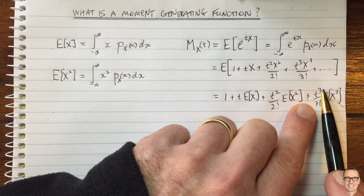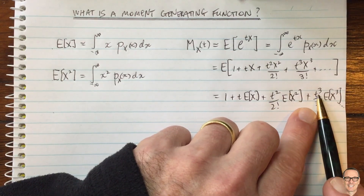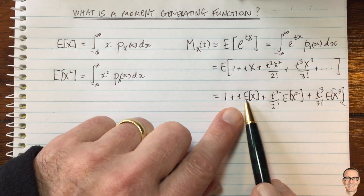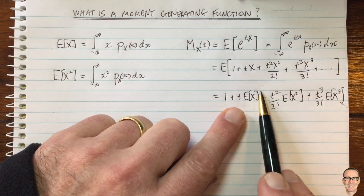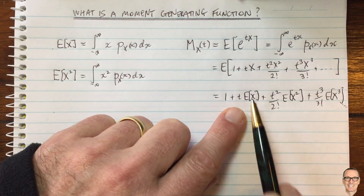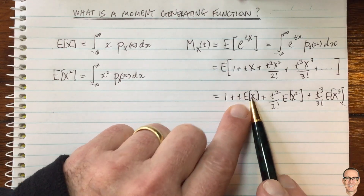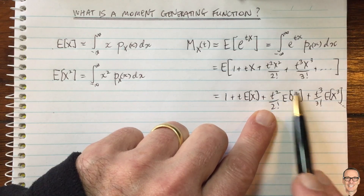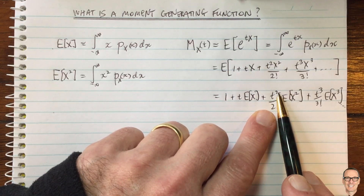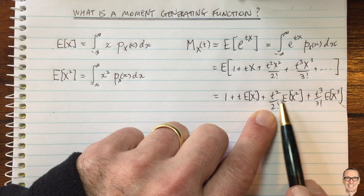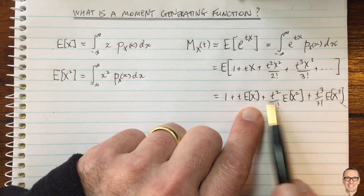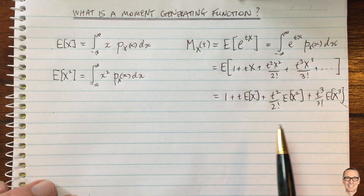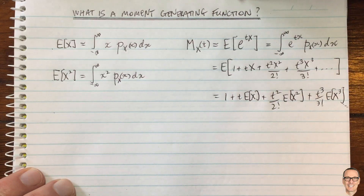When you take one derivative and set t equal to zero, you're left with just E[x]. When you take a second derivative, the first-order term disappears, and the second-order term has a single power of t remaining; setting t equal to zero then leaves just E[x squared]. So by repeated differentiation and evaluating at t equals zero, you can extract each successive moment.